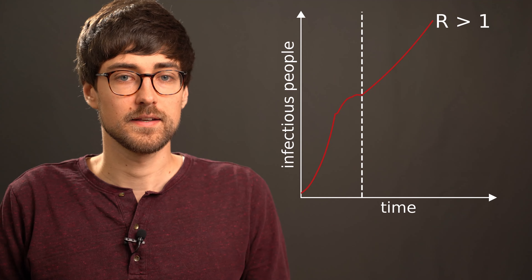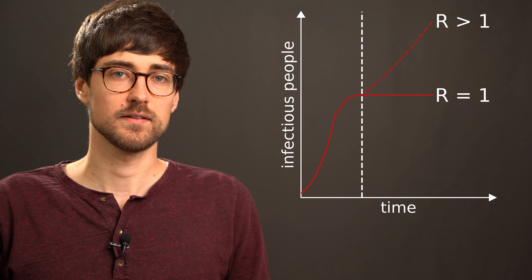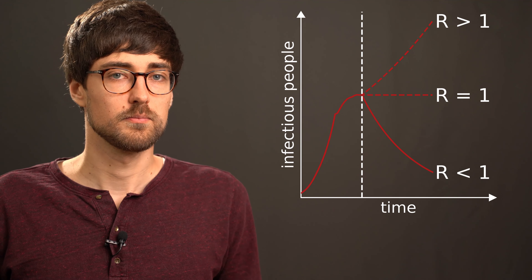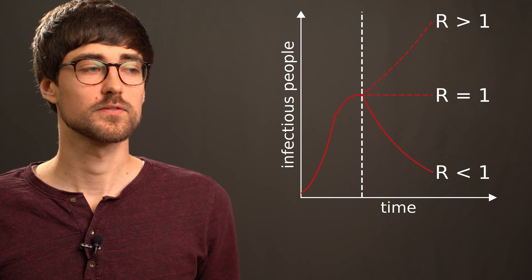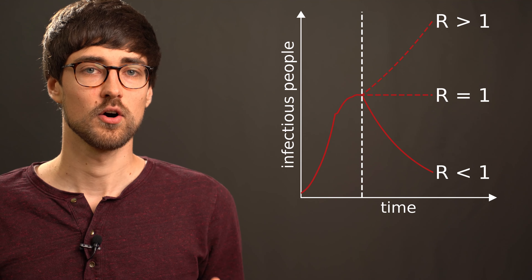Essentially there are three scenarios which have been described in a recent publication by the Helmholtz Society. We can define these scenarios in terms of the reproduction number R, which tells you how many people get infected by one infected person. If we relax the measures and R climbs above one, the number of infectious people will rise again. If we manage to keep R at one, the number stays constant, and if we keep R below one, the number will decline. We don't have to talk much about the first scenario because with an exponentially growing number of infectious people, hospitals will be overwhelmed sooner or later.